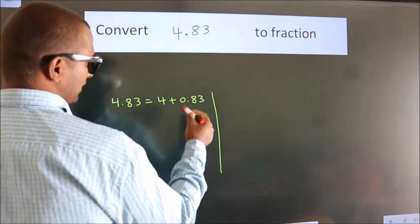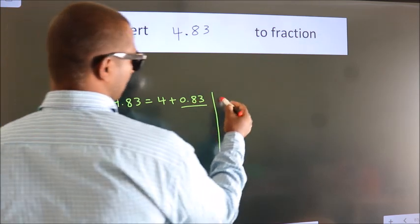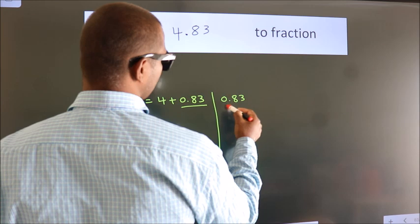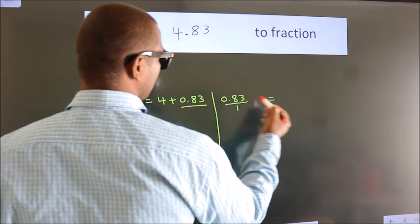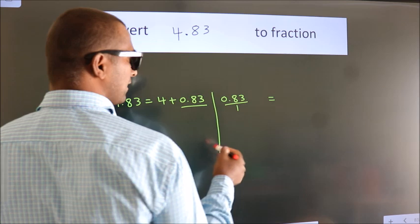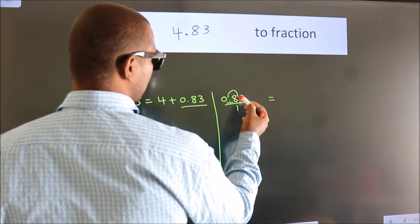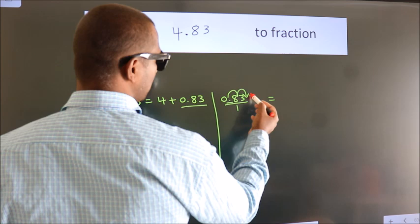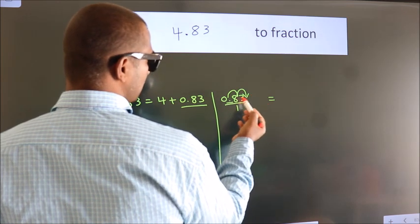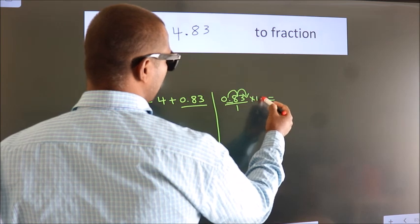Next, convert this to fraction over here. So 0.83. To convert this to fraction, we have to move this decimal after 1, 2 numbers. To move this decimal after 2 numbers, multiply it with 100.